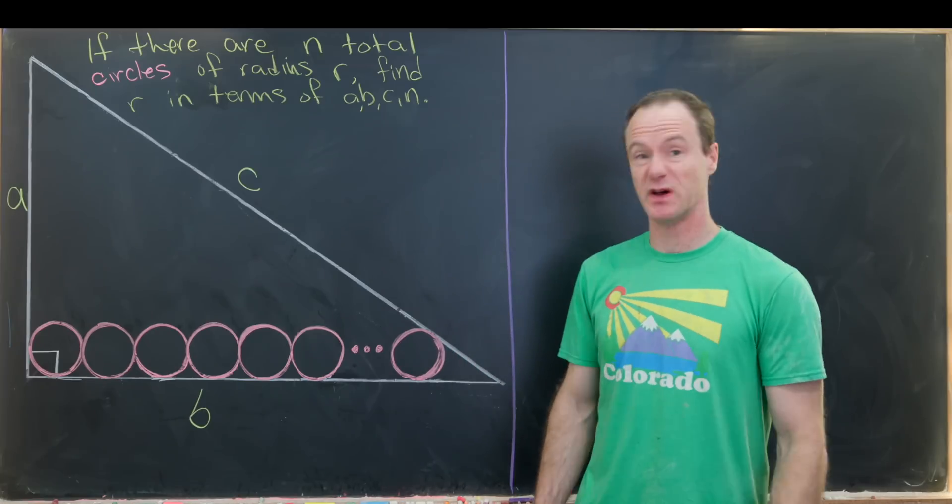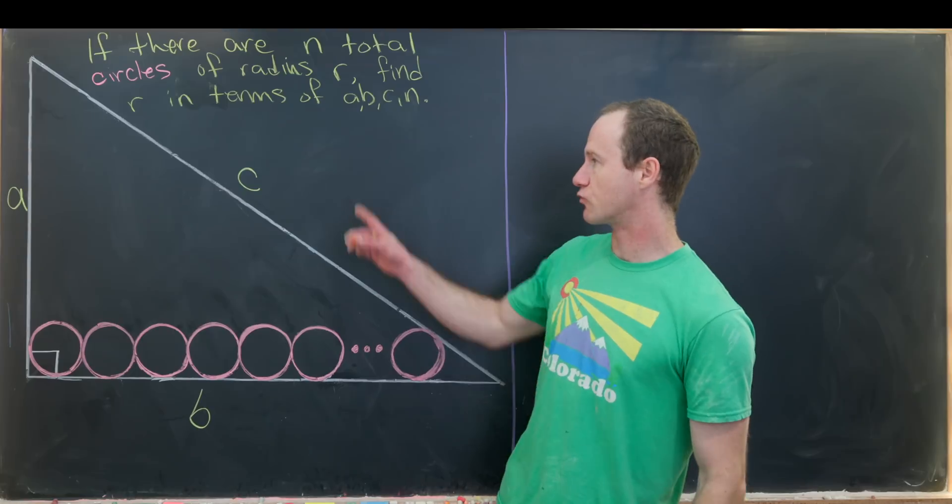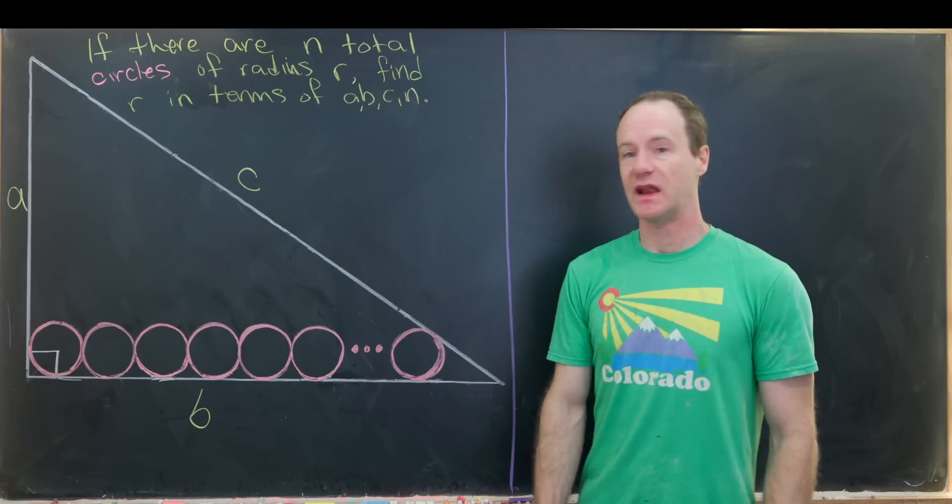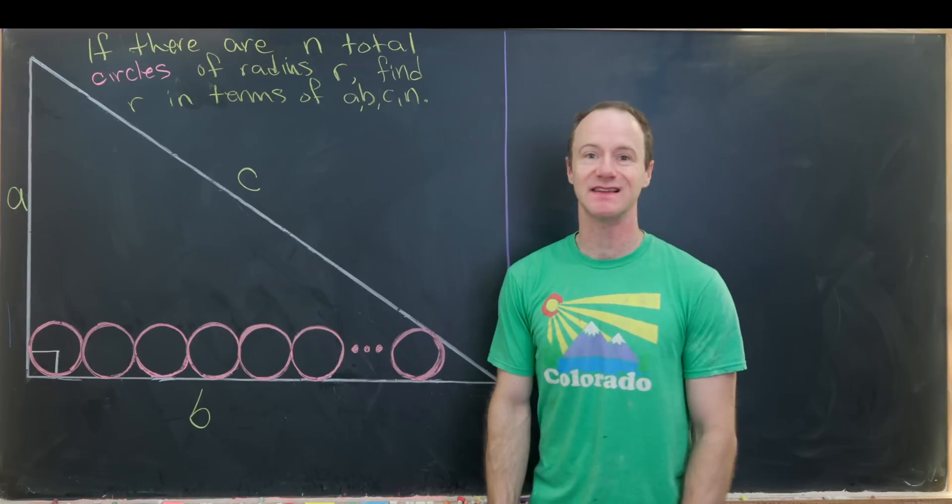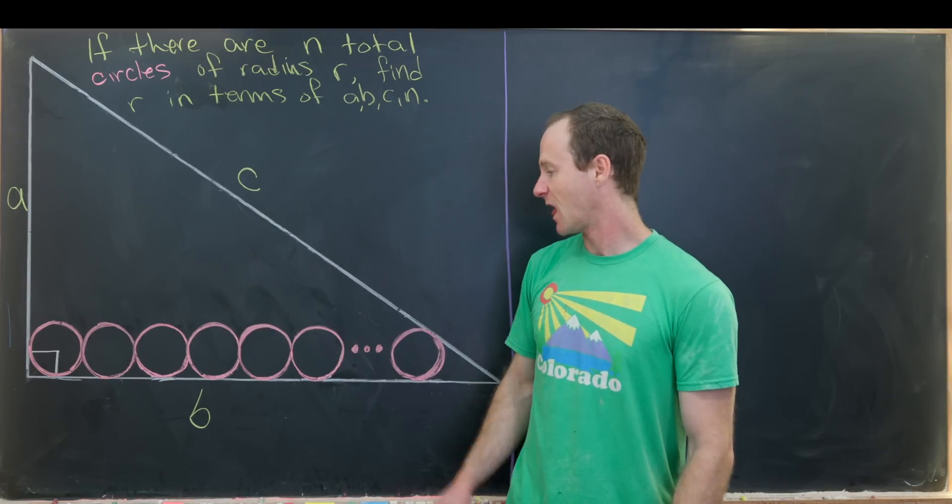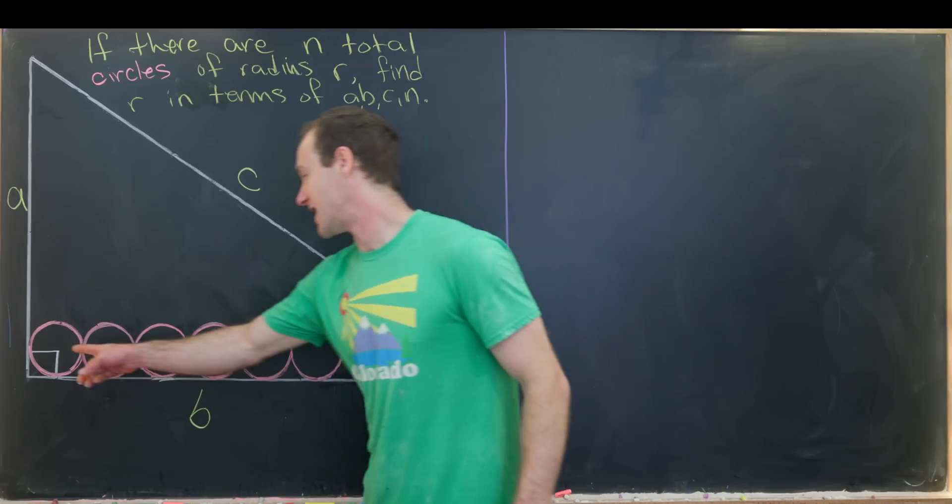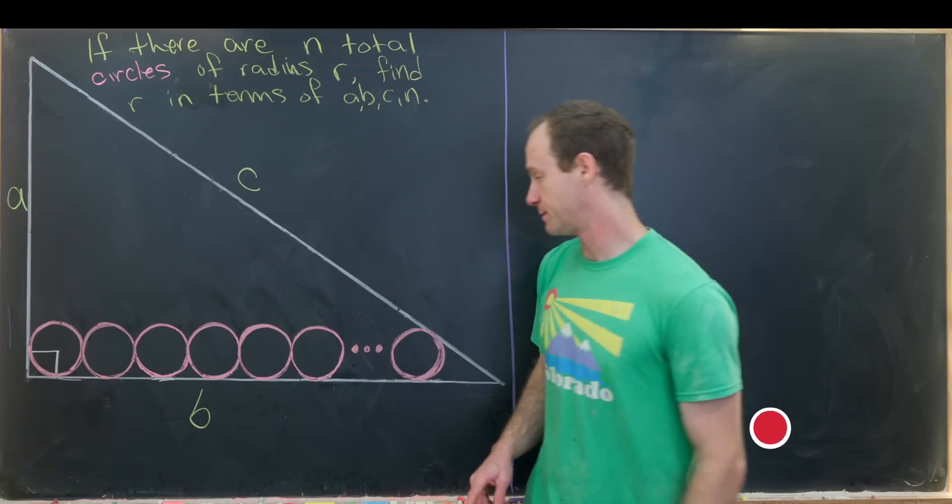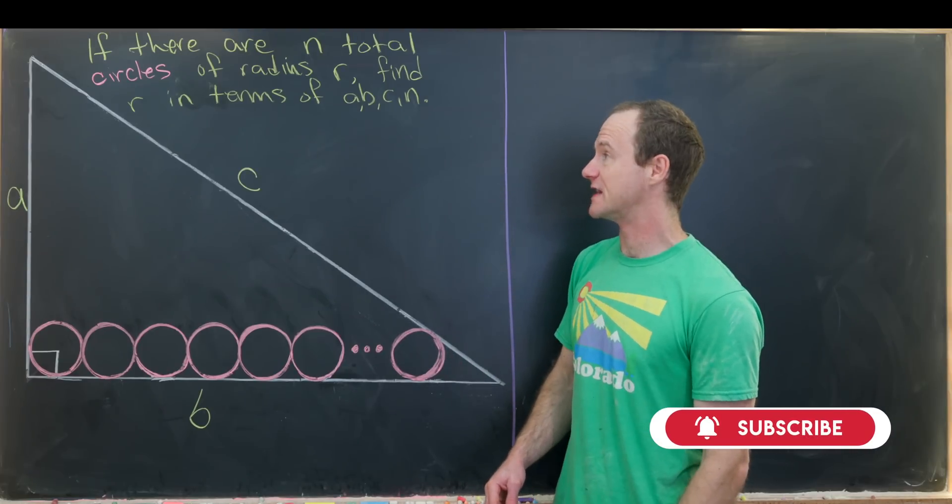Today we're going to look at a fairly short but really nice geometry problem. Let's say we've got a right triangle with side lengths A, B, C, where C is the hypotenuse. And then along the base of the triangle inside we have inscribed N circles that are next to each other like this picture right here of radius R.